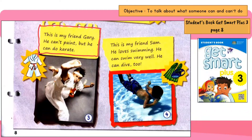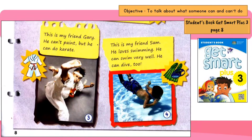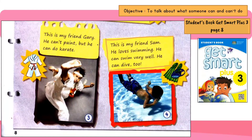This is my friend Gary. He can't paint, but he can do karate. This is my friend Sam. He loves swimming. He can swim very well. He can dive too.